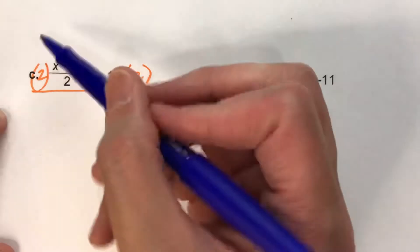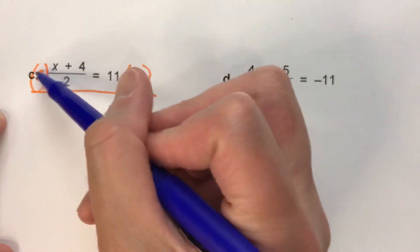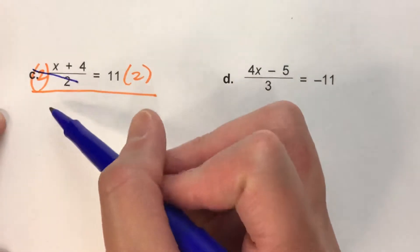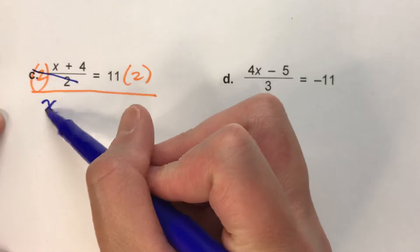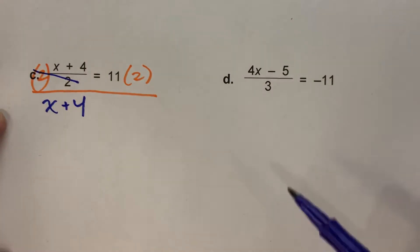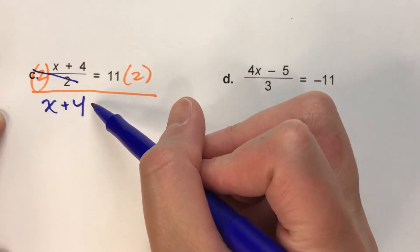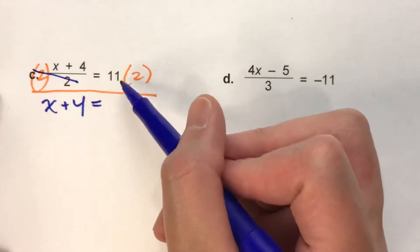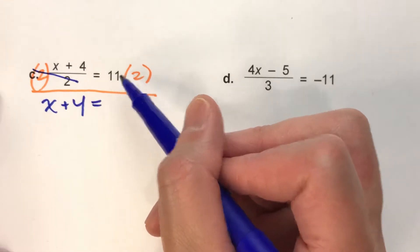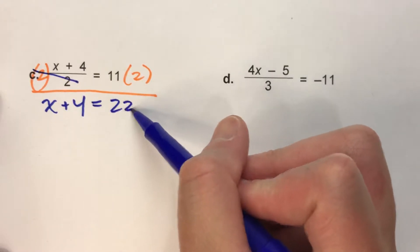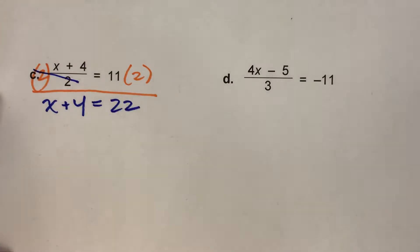Multiplying and dividing by 2 undo each other, and all that's left is x plus 4. The equal sign drops down, and on the other side, 11 times 2 is 22.